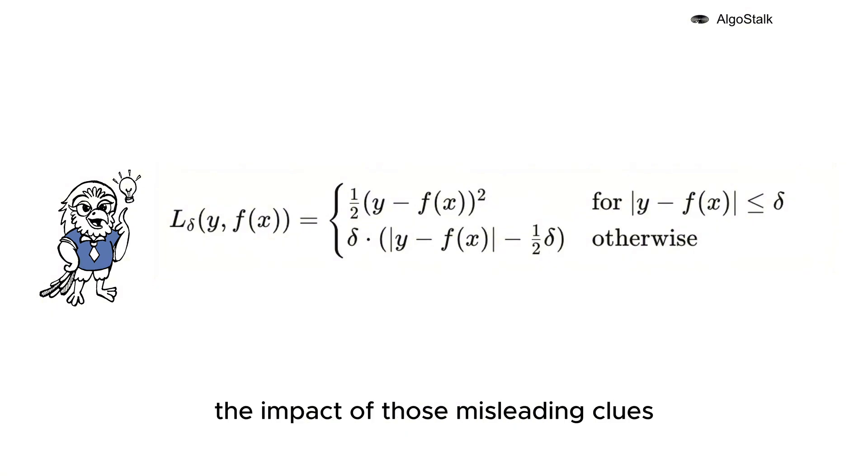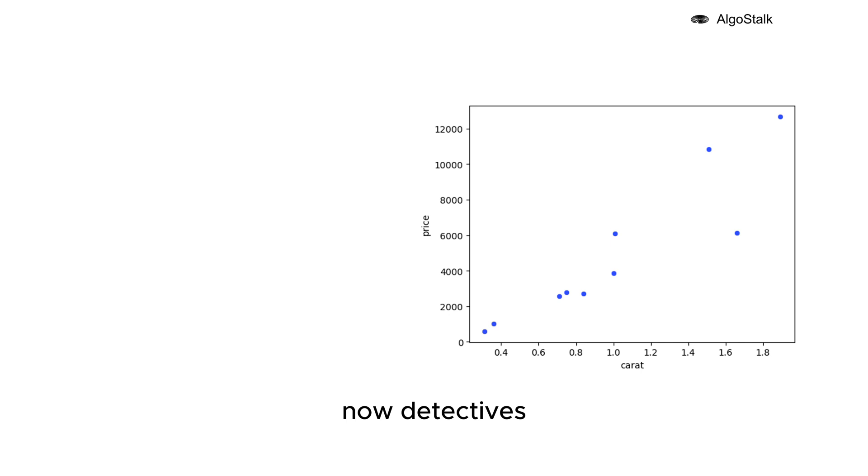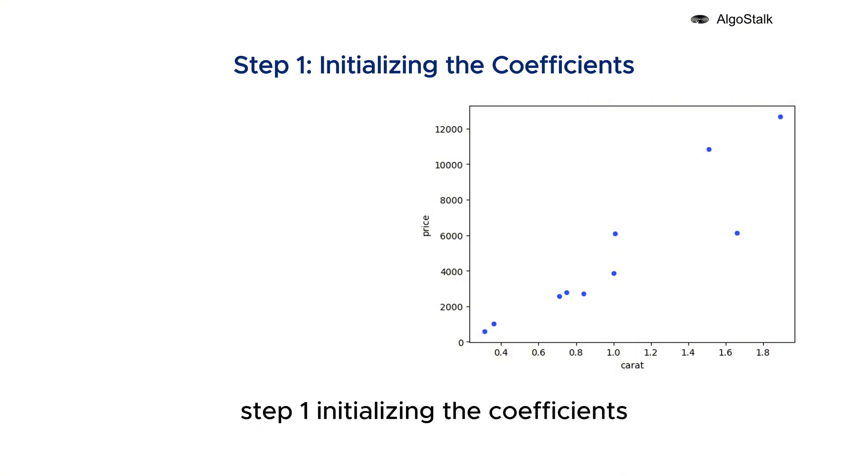How Huber works: Now detectives, it's time to break down how Huber regression works step by step. Let's walk through the process together. Step one: initializing the coefficients. Huber initializes the coefficients starting with no assumptions. These coefficients represent how much each carat influences the price. As per initial assumption, there is no effect of carat on the price.